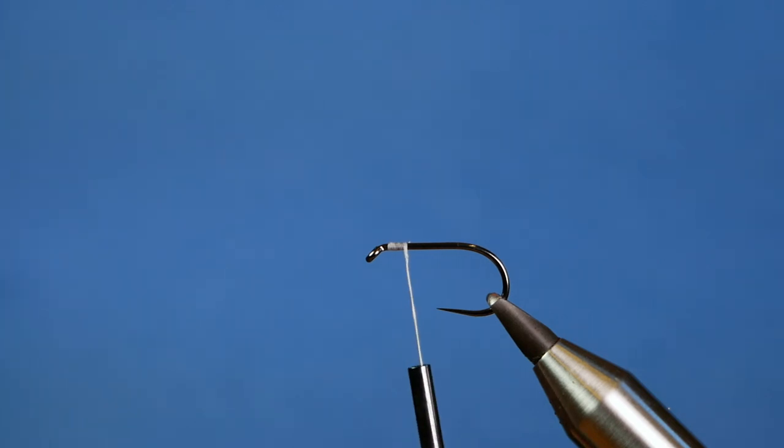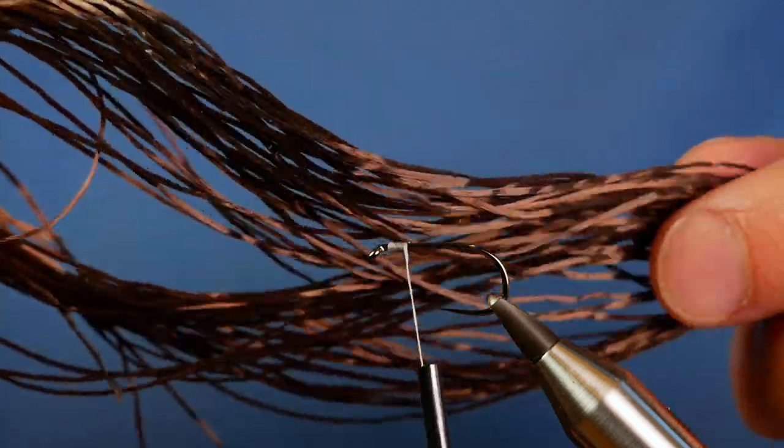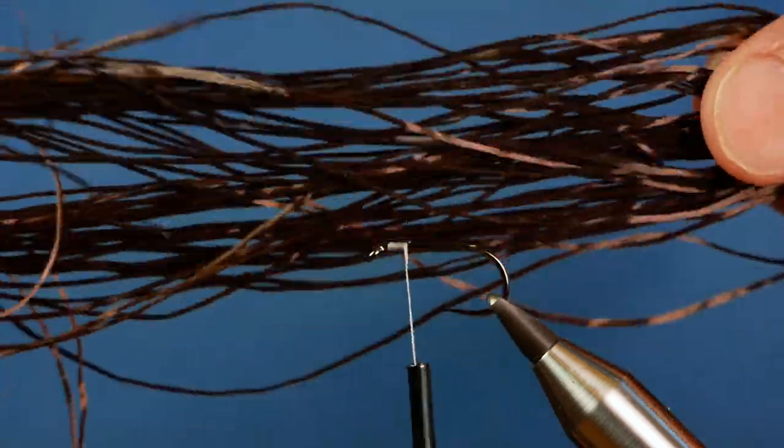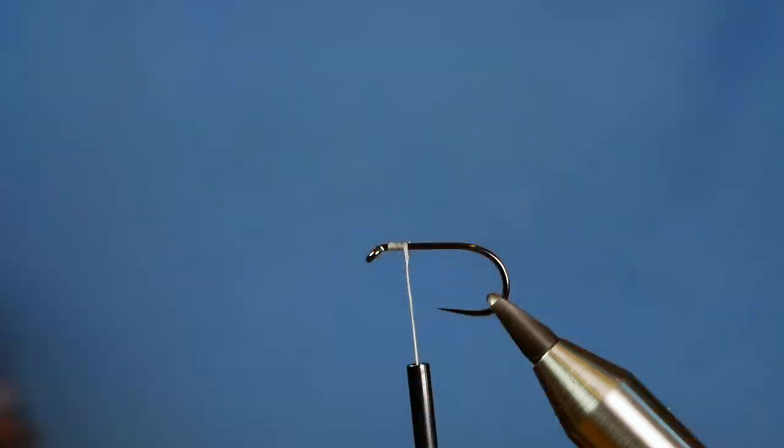Now for the rib of this fly I'm using some flexi-floss here. This one's a kind of browny color. I'm sorry I can't remember where I got it from. I think it might have been Bill McElroy actually but I'm not sure. I've had it for years.